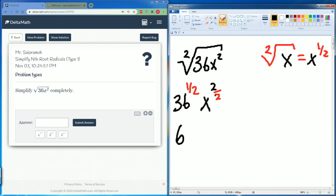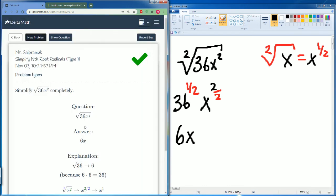x squared divided by 2 is just x. So the answer is 6x. Submit. There you go.